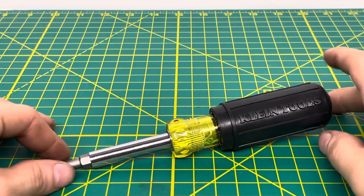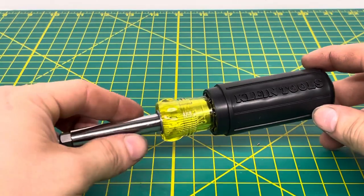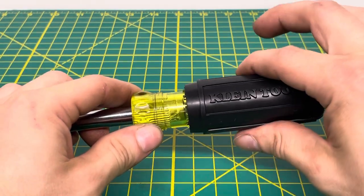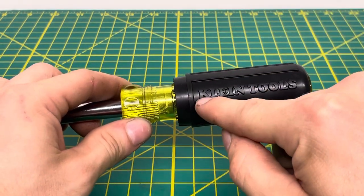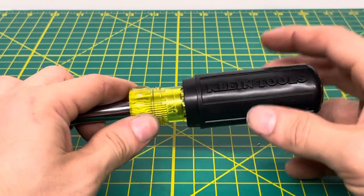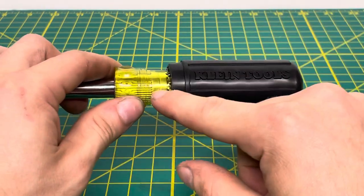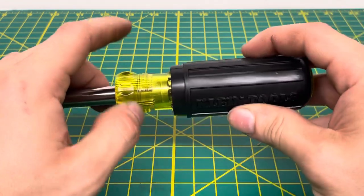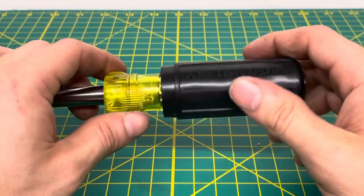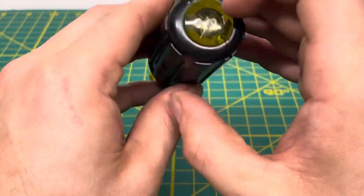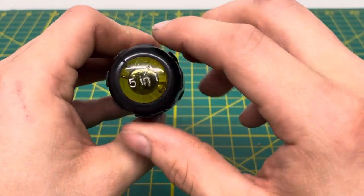This is a 5-in-1 screwdriver from Klein Tools. Like most of their screwdrivers, you have this nice rubberized handle, and as you can see right here you have the Klein Tools name stamped into that rubber handle, which is super nice. This is probably one of the most comfortable handles for a screwdriver out there. You have this yellow plastic resin that comes on most Klein Tools as well.